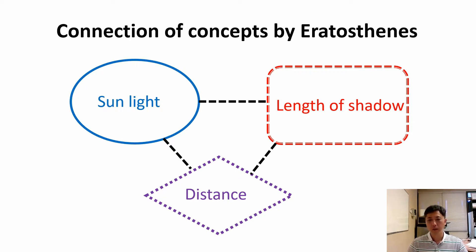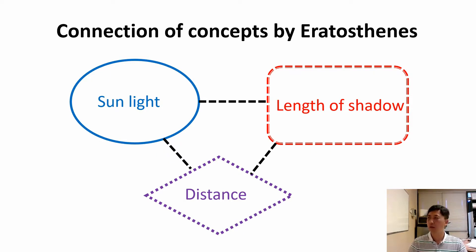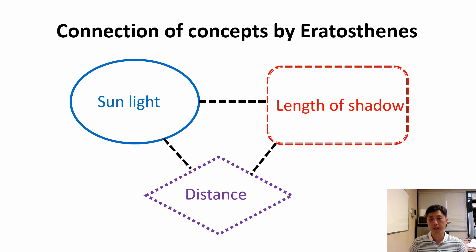Even 2,000 years ago, people thought the earth was flat — but Eratosthenes figured out the earth is a sphere. He even calculated the diameter and circumference of the earth, with an error margin of less than around 7% — and today with satellites we calculate it with less than 5-7% difference. How could he do it? Using only a stick, shadow angles, and measurements, he figured out everything — something that even some mathematics graduates today might not be able to do.